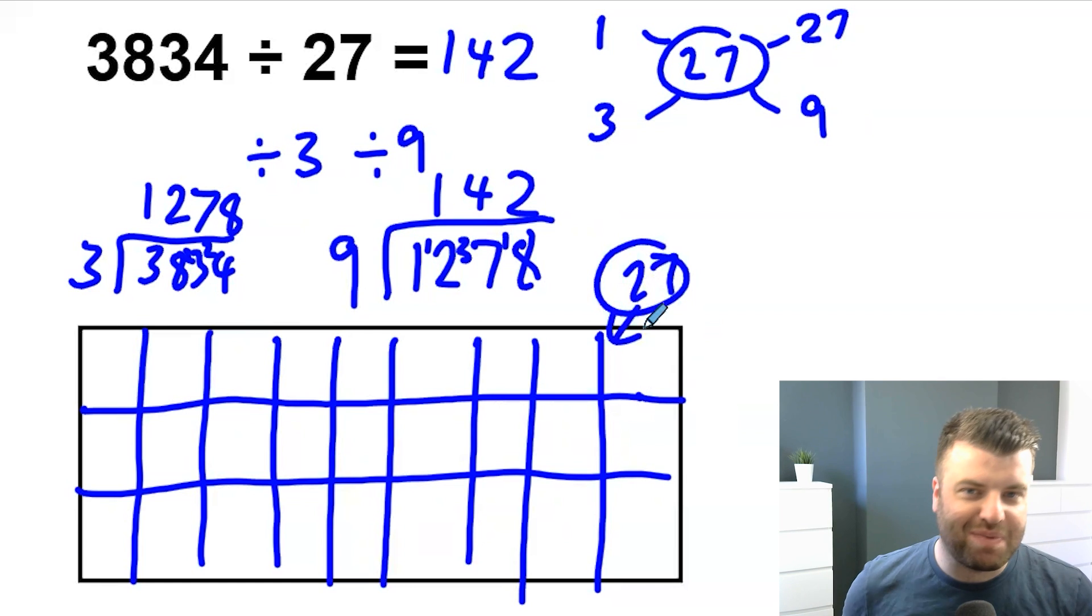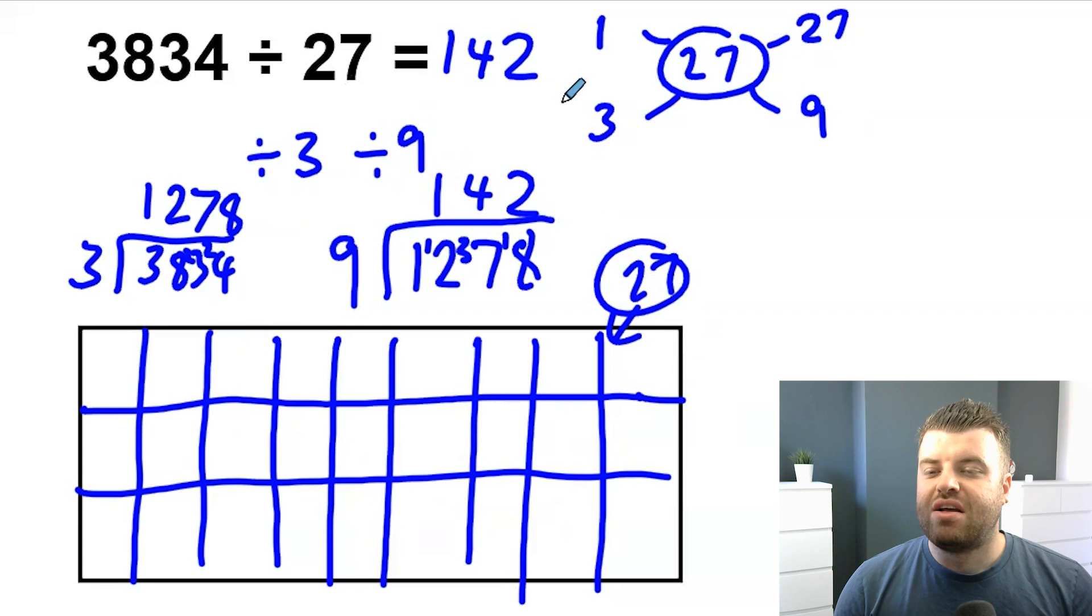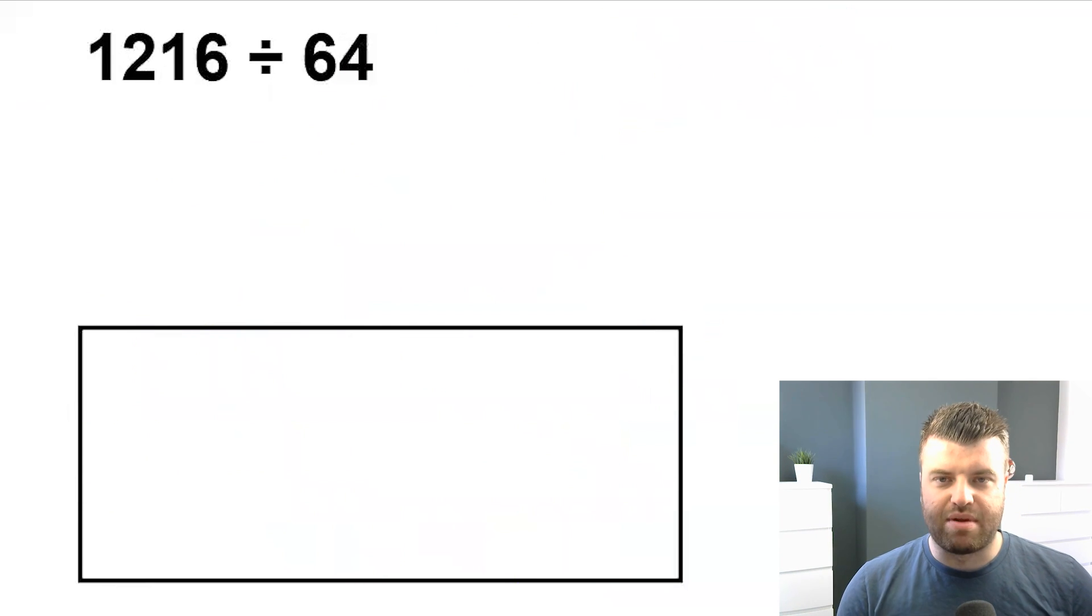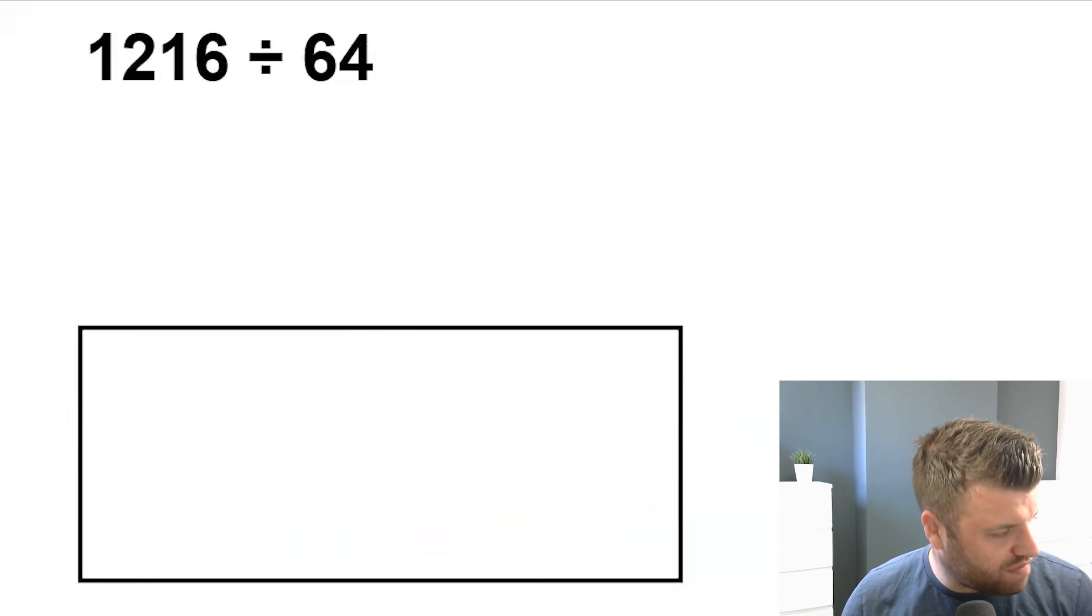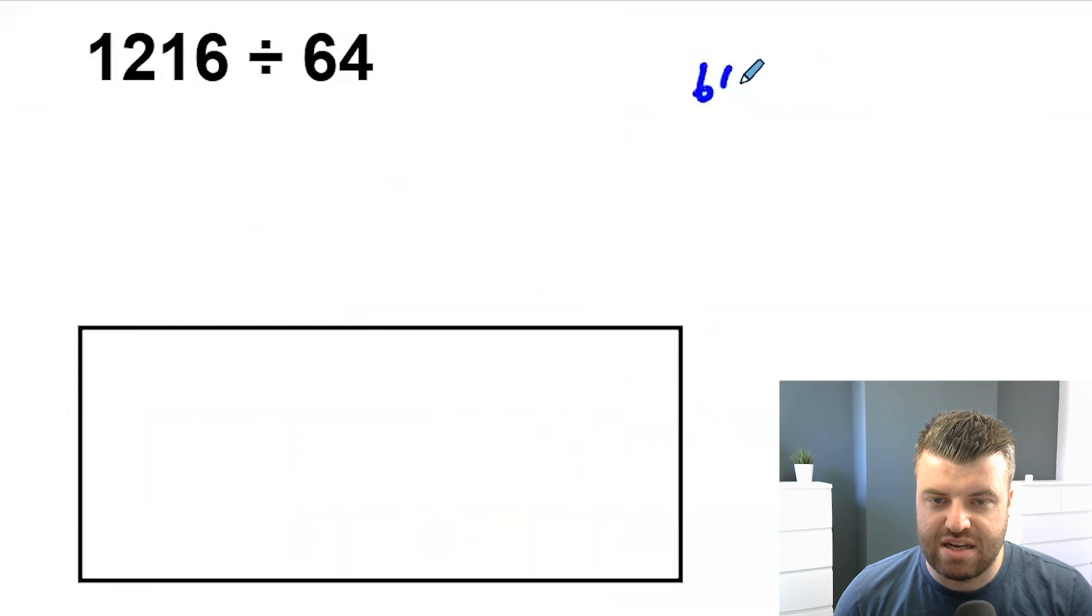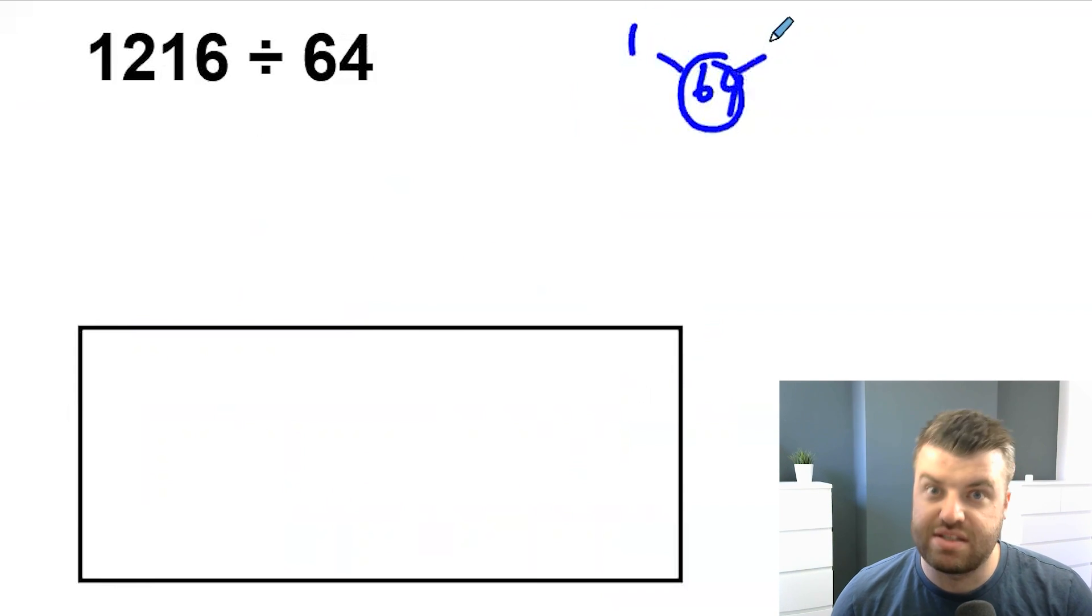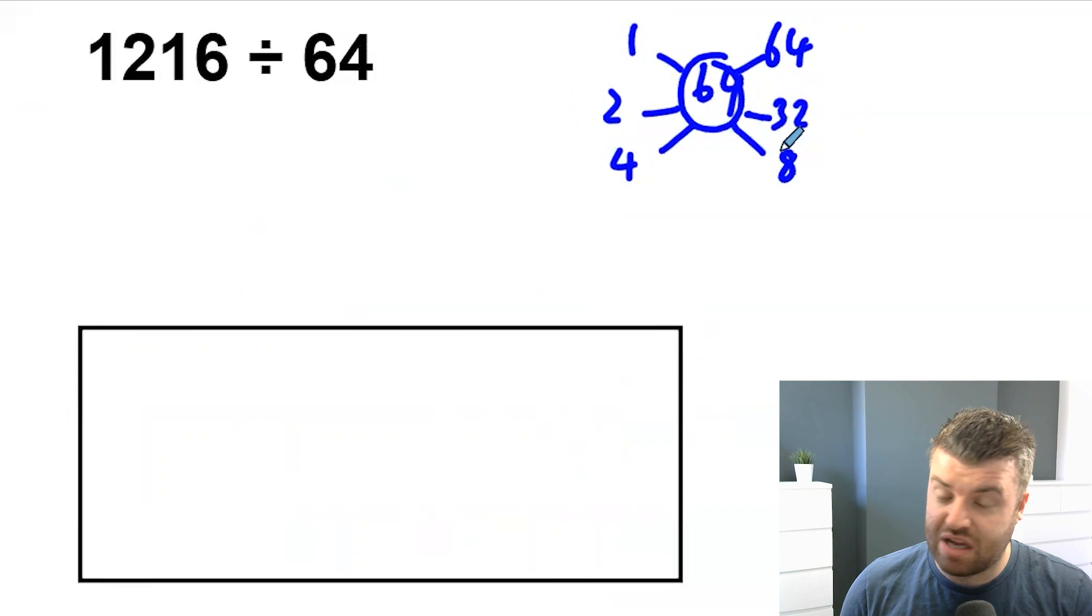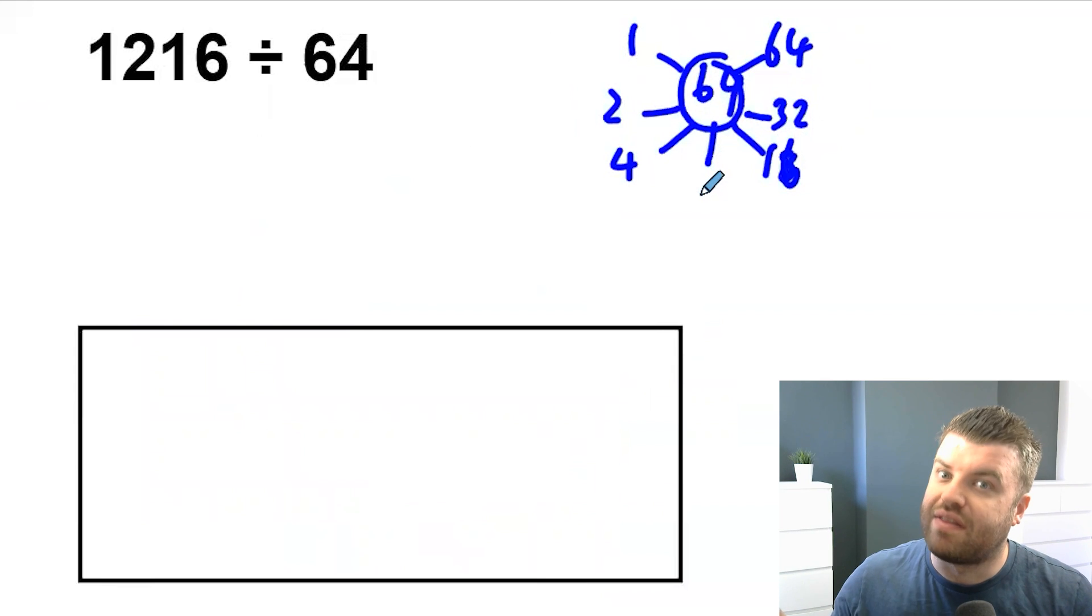That's how we divide by 2-digit numbers that aren't prime. It's not going to work if it's a prime number. Now, we have one more example. So, this isn't a prime number. 64 has loads of factors. And we could start listing them out here. We obviously know that we could do 1 and 64. We could also do 2 and 32. We could also do 4 and 16.